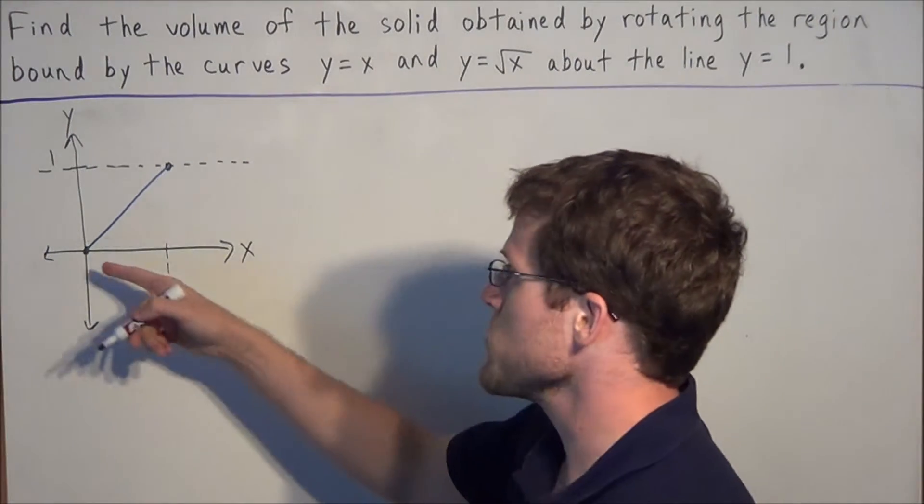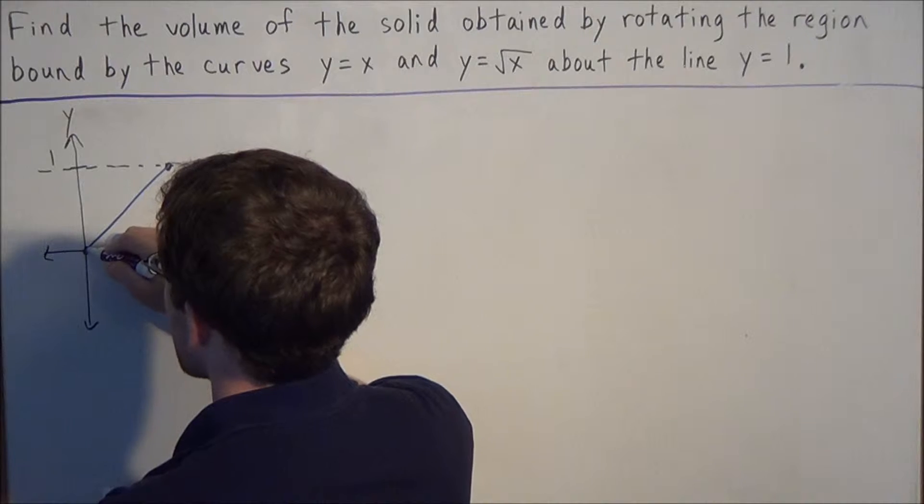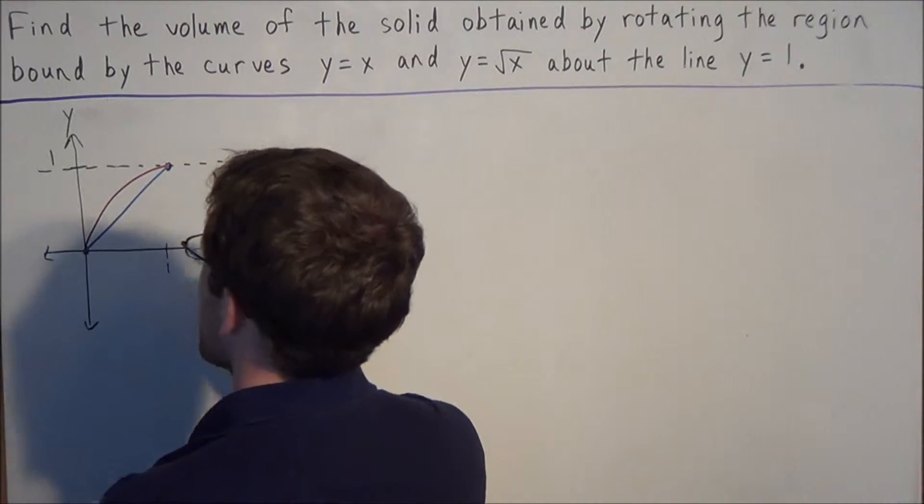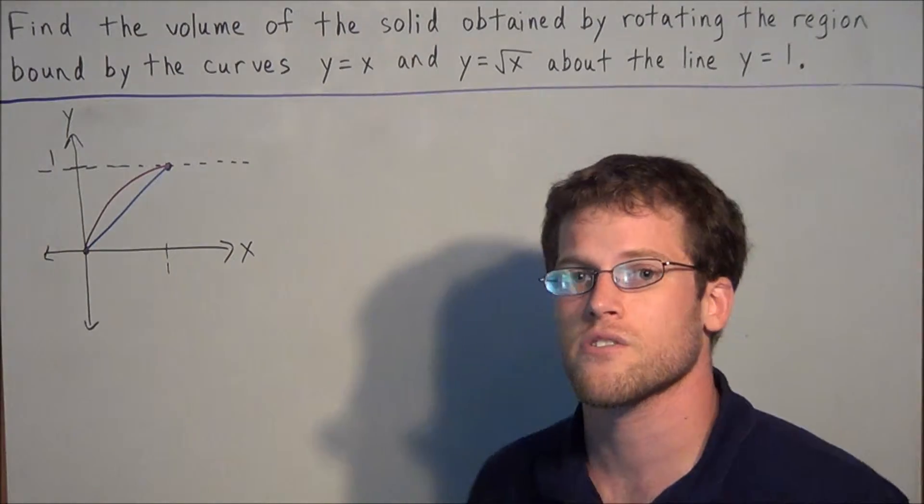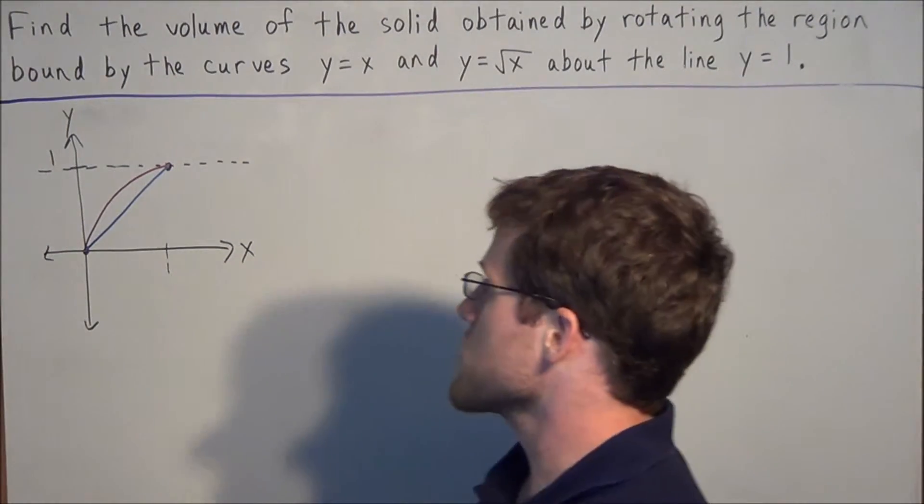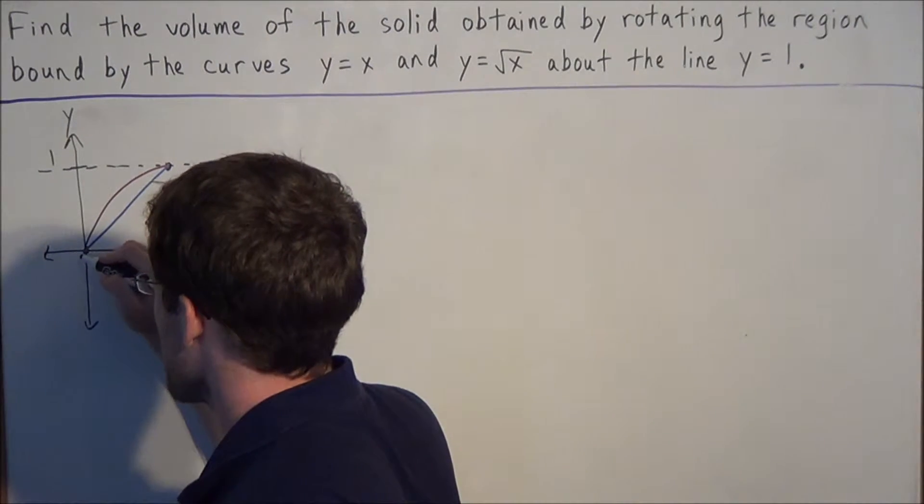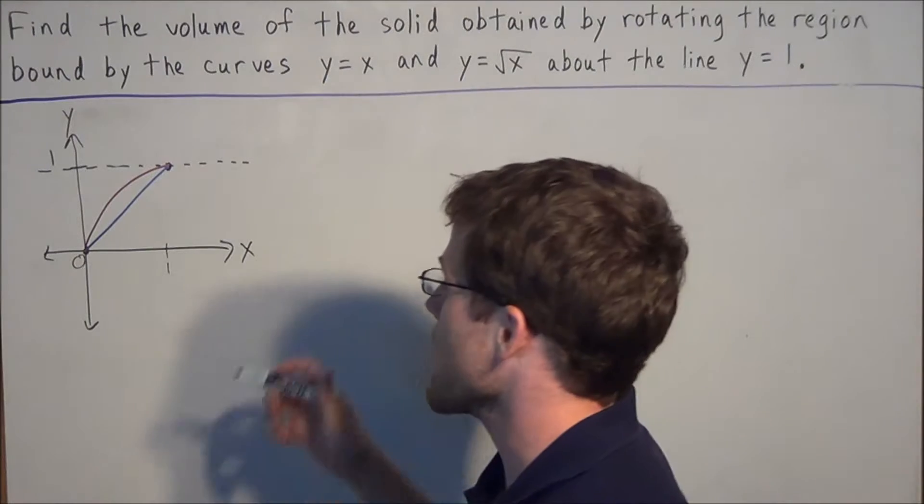It's important to note that between 0 and 1, the graph of y equals square root x will go above the line y equals x. This is of vital importance because this is going to determine how we set up our integral. We only care about the region between 0 and 1 because these are the two places that both of the equations intersect.